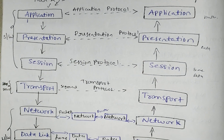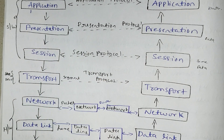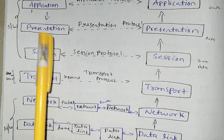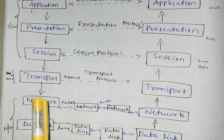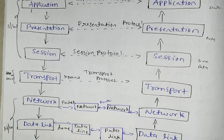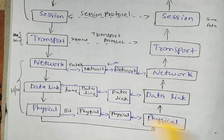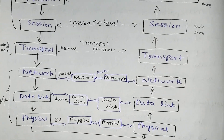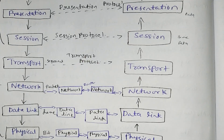We have 7 layers: application layer, presentation layer, session layer, data link layer, and physical layer.